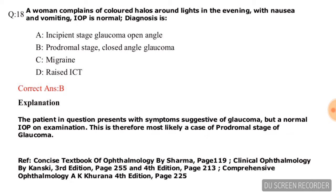Question number fourteen: A woman complains of colored halos around lights in the evening with nausea and vomiting; IOP is normal. Diagnosis is — options are incipient stage glaucoma, open angle; prodromal stage closed angle glaucoma; migraine; raised ICT. The correct answer is option B, prodromal stage closed angle glaucoma.